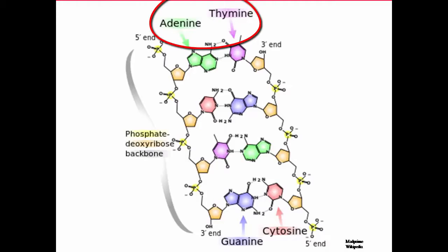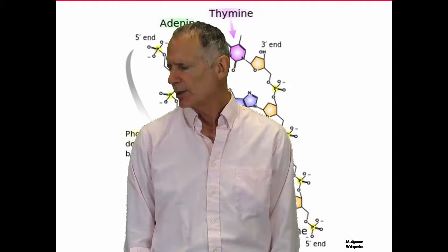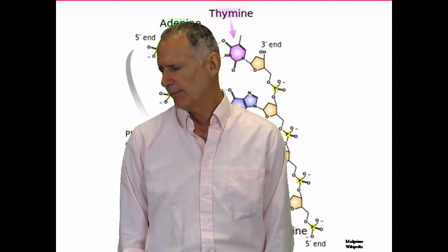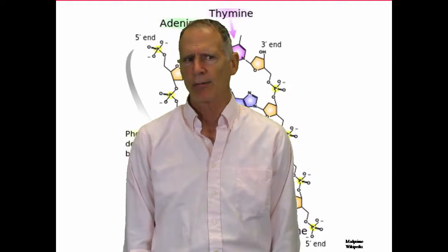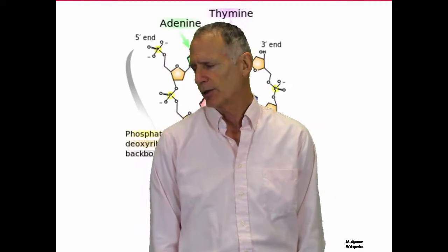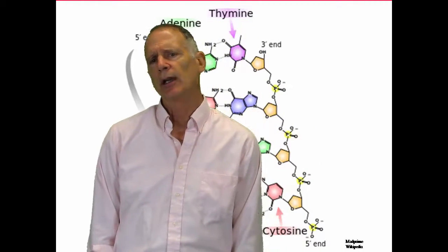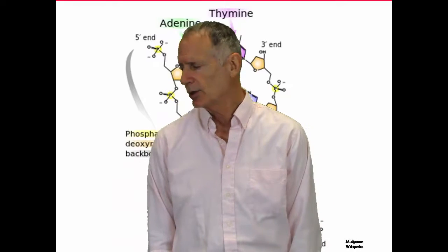And it's got four bases, the purines, which are adenine and thymine, and then you have the pyrimidines, which are guanine and cytosine. So you've got these four bases. You've got this phosphate deoxyribose, it's a 5-carbon sugar.